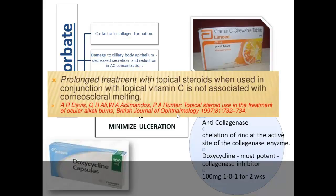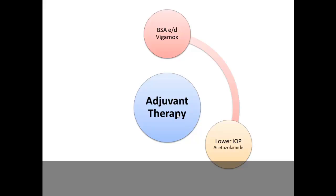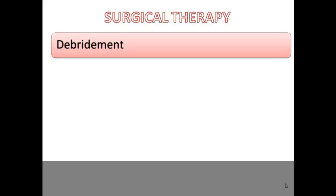Studies state that prolonged topical steroid use in conjunction with vitamin C is not associated with corneal-scleral melt. Adjunct treatment includes broad-spectrum antibiotics such as Vigamox every hour; acetazolamide half-tablet three times a day if IOP elevation occurs; and cycloplegics — tropicamide for milder injuries, atropine for severe ones, with homatropine in between. If pH is not controlled despite good irrigation, this suggests retained matter in the ocular surface.